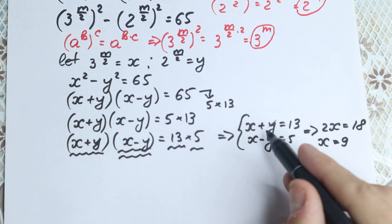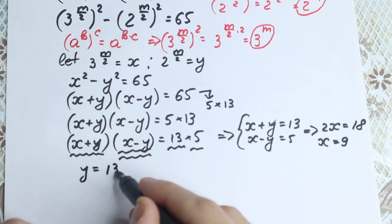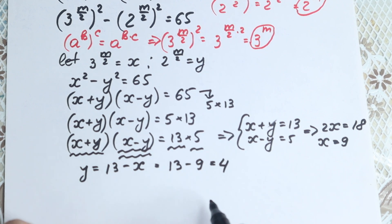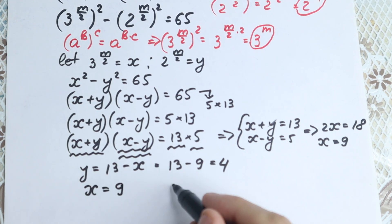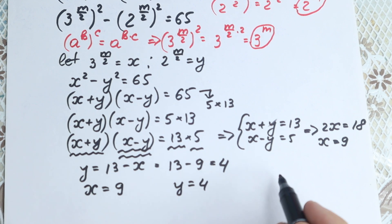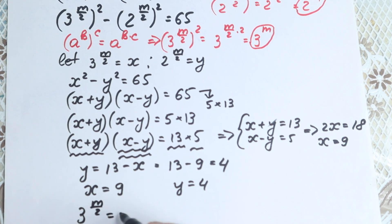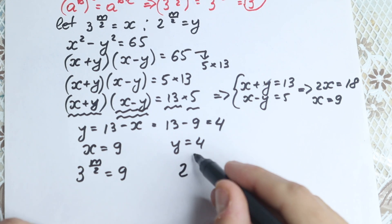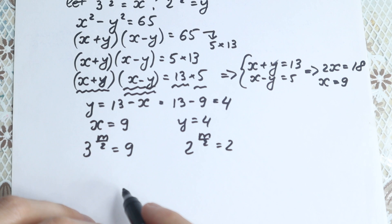Let's find y. From the first equation, y equals 13 minus x, which is 13 minus 9, equal to 4. So x equal to 9 and y equal to 4. Now let's go back to our substitution and plug these values in.